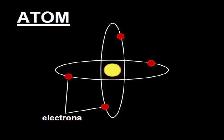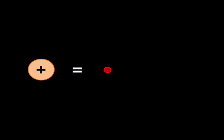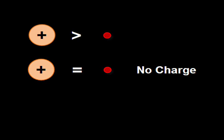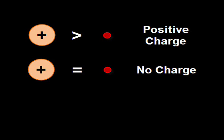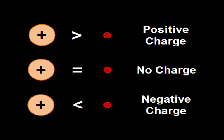The magnitude of the charge of a proton and electron is the same. Normally, matter is neutrally charged, meaning that the number of protons and electrons are the same. If a matter loses some of its electrons, there will be more protons compared to electrons, and the matter will be positively charged. If a matter gains some electrons, the number of protons will be lesser than the number of electrons, and thus the matter will be negatively charged.